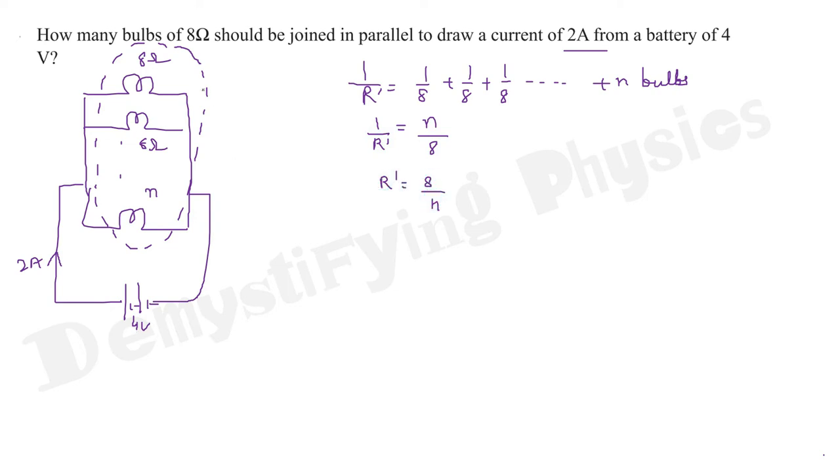Now, if I replace the bulbs with one resistor R dash, this means effective resistance. You are replacing all resistors with one resistance R dash. Current is 2 ampere and the battery is of 4 volt only.